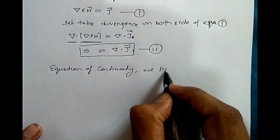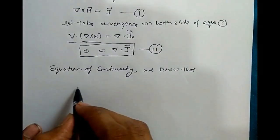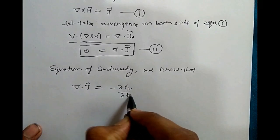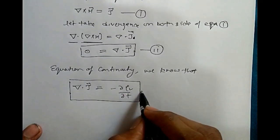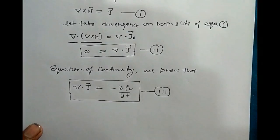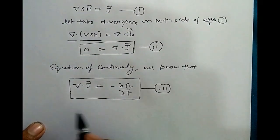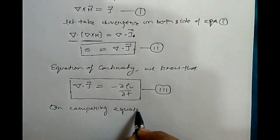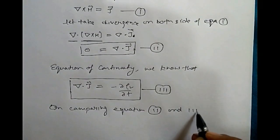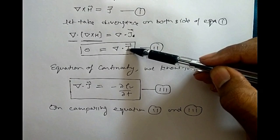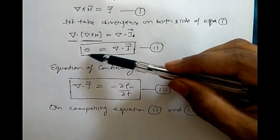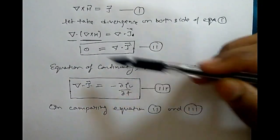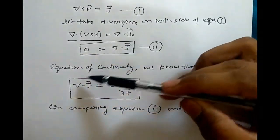From the equation of continuity we know that del·J equals minus del rho_V by del t. This is a fundamental equation and always valid — consider this equation number three. Comparing equations two and three: in equation two, the divergence of current density is zero, whereas in equation three it equals some quantity. These two are inconsistent with each other.